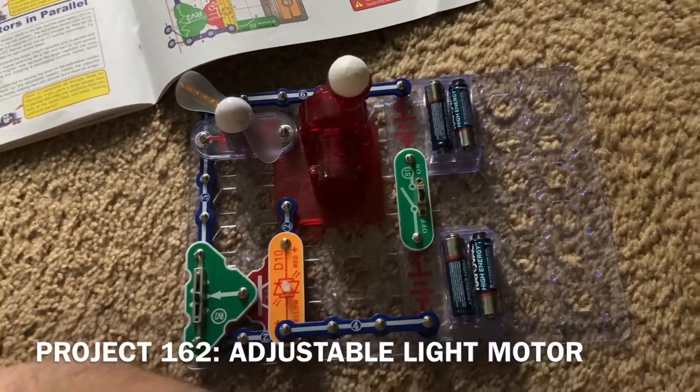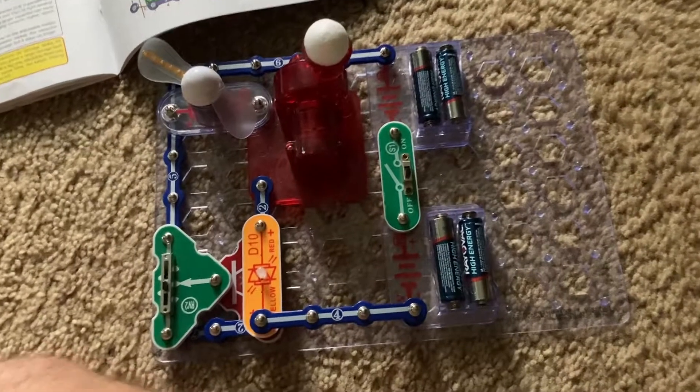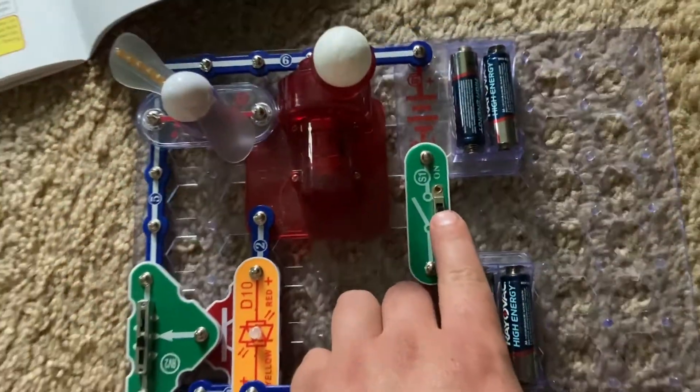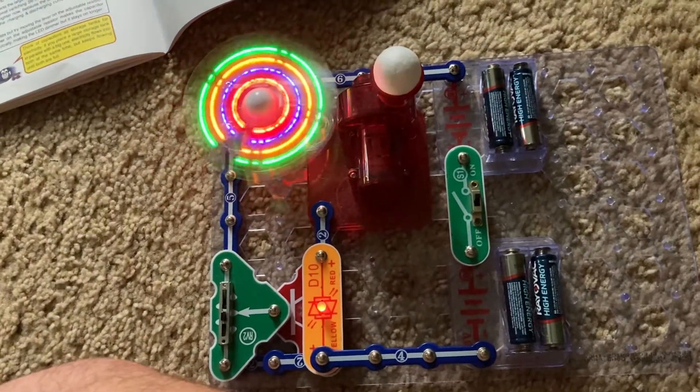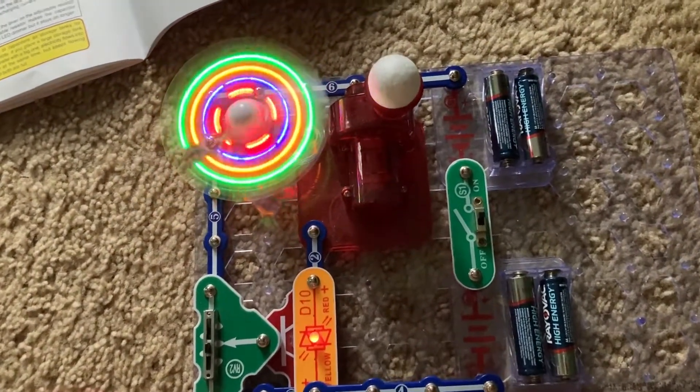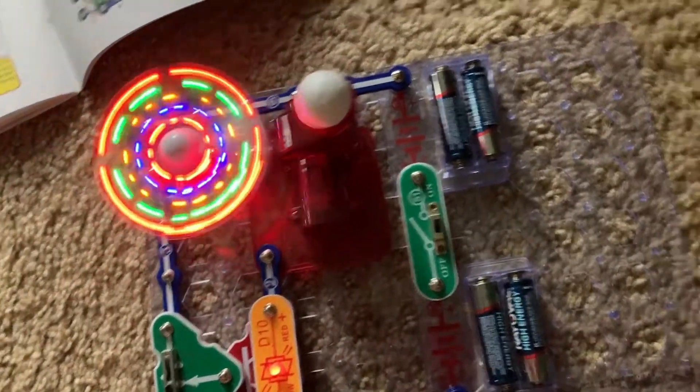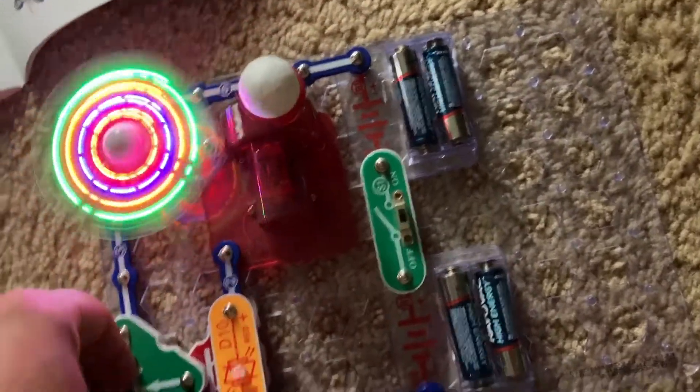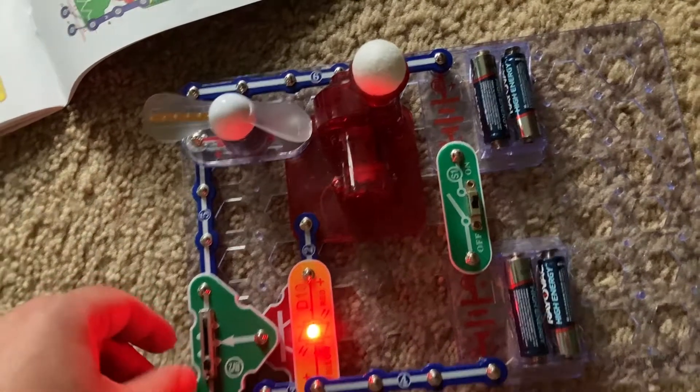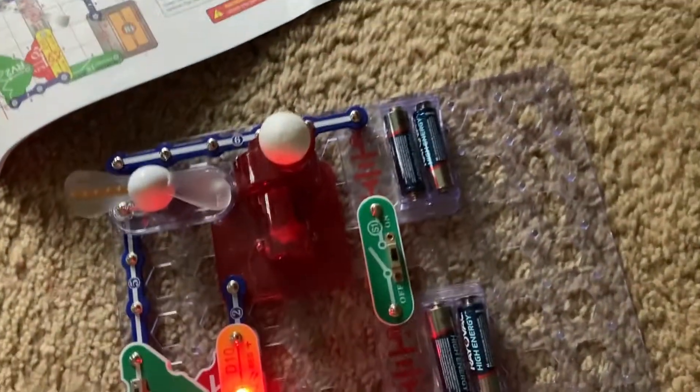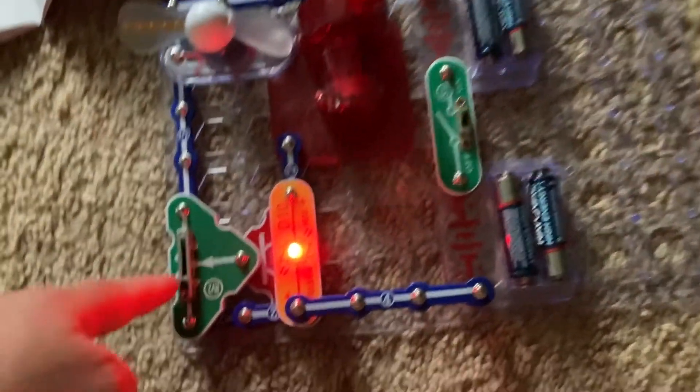Project 162 is adjustable light motor. I'm going to turn on the slide switch and the light motor, bicolor LED, and air fountain will operate, but use the adjustable resistor to adjust the current flowing to any of these components.